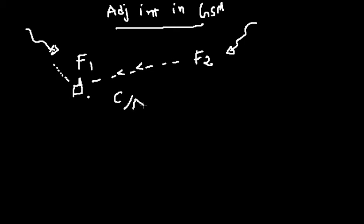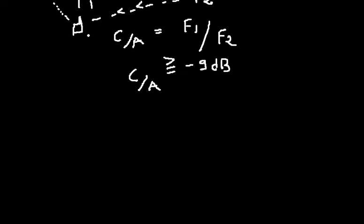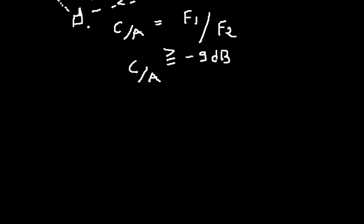In this location, when we say adjacent channel, that is C by A, so the carrier divided by adjacent channel. In this case, let's say F1 is my carrier and F2 is my adjacent channel. So let us see what exactly we have to make the C by A in GSM. C by A is supposed to be equal or greater than minus 9 dB.